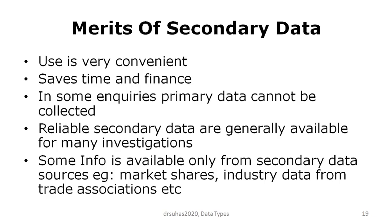Secondary data is very convenient — it saves a lot of time and finance. In some inquiries, primary data collection is not possible; for instance, if you want summer-season data during winter, you can use reliable secondary sources about previous works. Reliable secondary data is generally available for many investigations. For some information — such as stock market data, shares, or industry information — you can gather it from trade organizations or their published bulletins, and you may have to rely on secondary data.